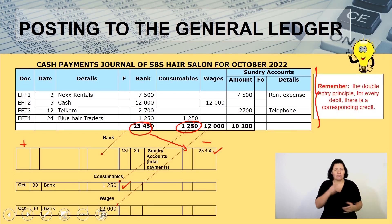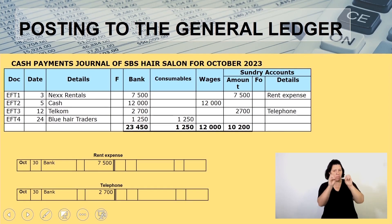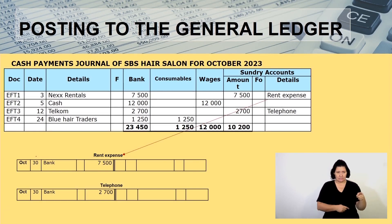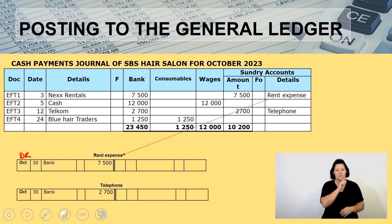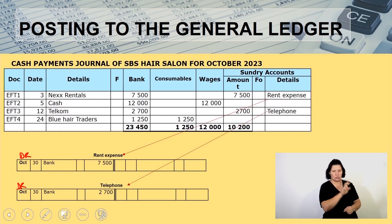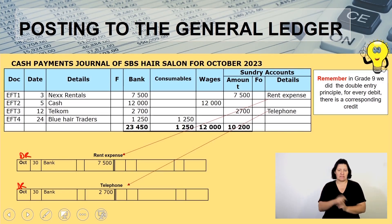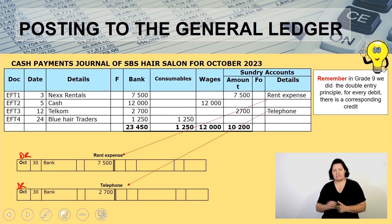Remember the double entry principle: for every debit, there has to be a corresponding credit. Rent expense is an expense — as you can see from its name — so on the debit side it increases. I have debited bank 7,500. Likewise, the telephone account is also debited. For every debit, there has to be a corresponding credit entry.